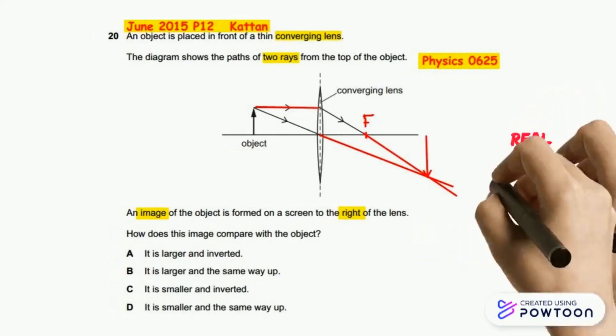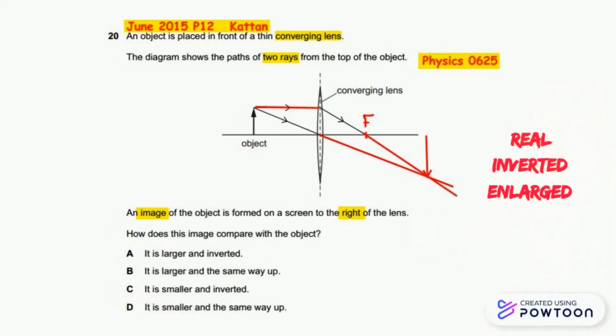These two refracted rays intersect at one point and form the image. The image is real, inverted, and enlarged.